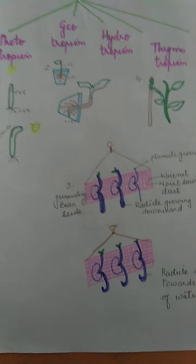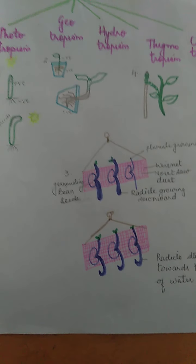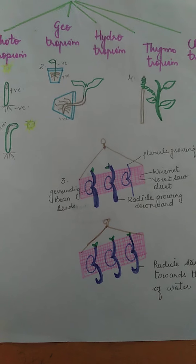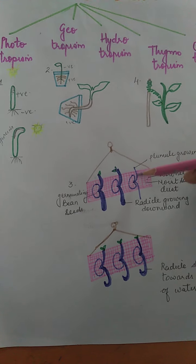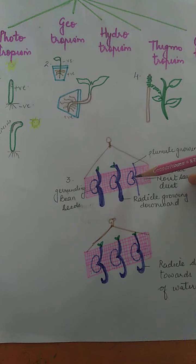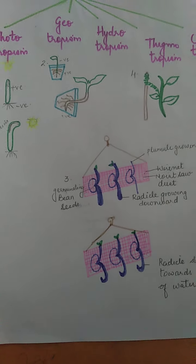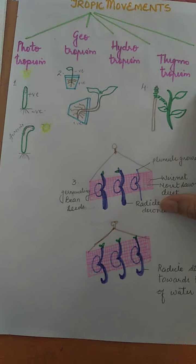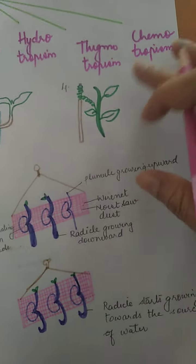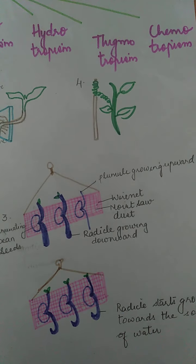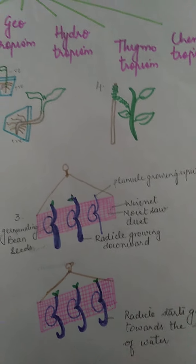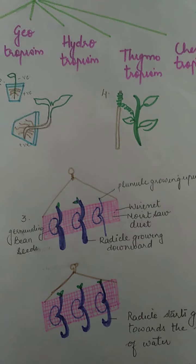It is water that directs the roots downwards into the soil, because roots are positively hydrotropic. Shoots do not show any response to the presence or absence of water — they keep growing upwards. So roots are positively hydrotropic and shoots are negatively hydrotropic. This is about hydrotropism.